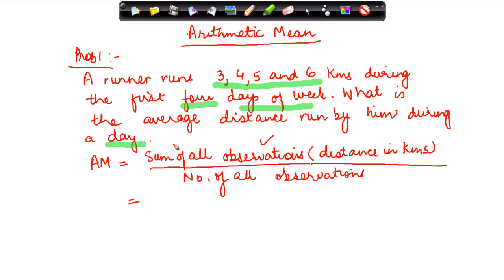Now what is the distance? It is 3, 4, 5 and 6. So I take 3 plus 4 plus 5 plus 6 and I divide it by what number of observation? How many number of observations are there? What is my variable? My variable is the number of days which is given to be as 4. In any case even if I count it 1, 2, 3, 4. So I come here at 4.